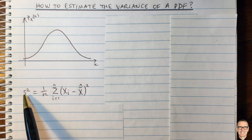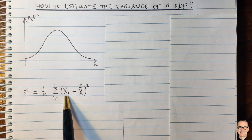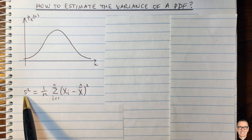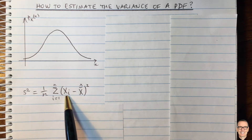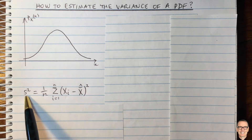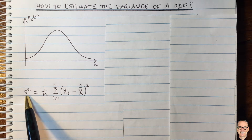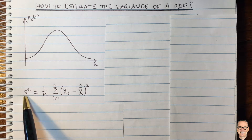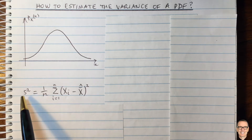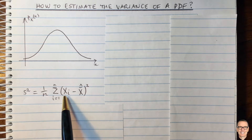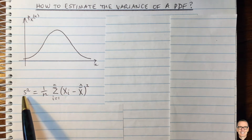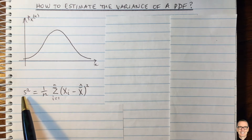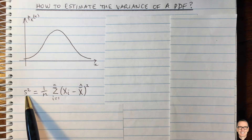One thing we notice straight away is that when you take a set of samples you'll get a particular estimate. If you take a different set of samples you will get a different estimate. This is one of the most important concepts to realize: this estimate itself is random. It depended on which actual samples you took. So this equation gives you a different value for different samples — therefore this is a random variable.